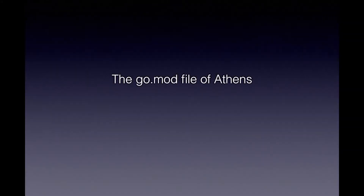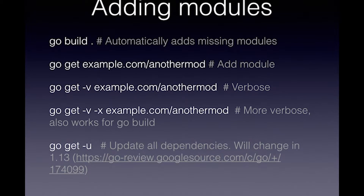How do you add modules? A lot of times you can just do go build or use your IDE, which will usually automatically call go build when you save. If you've used a module somewhere it will automatically get them. You can also add them by hand by doing a go get. If there are problems it's useful to do go get -v or even better go get -vx, which will tell you a lot of information about how it tried to get the module.